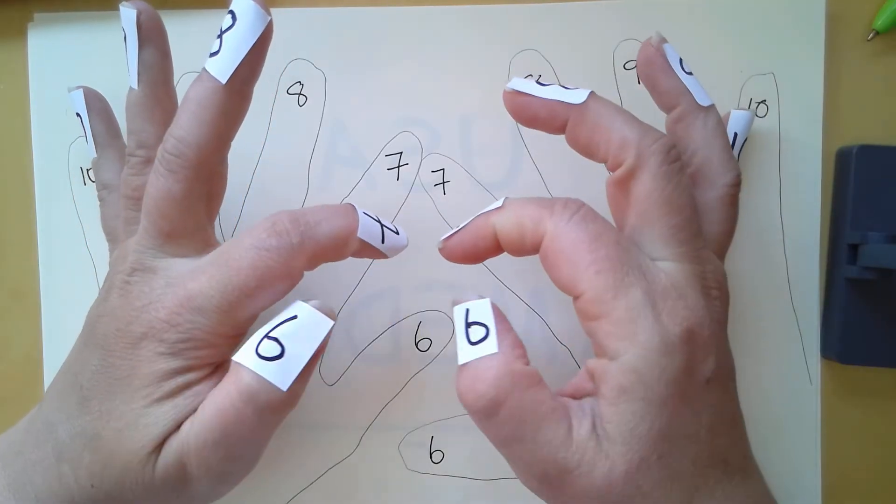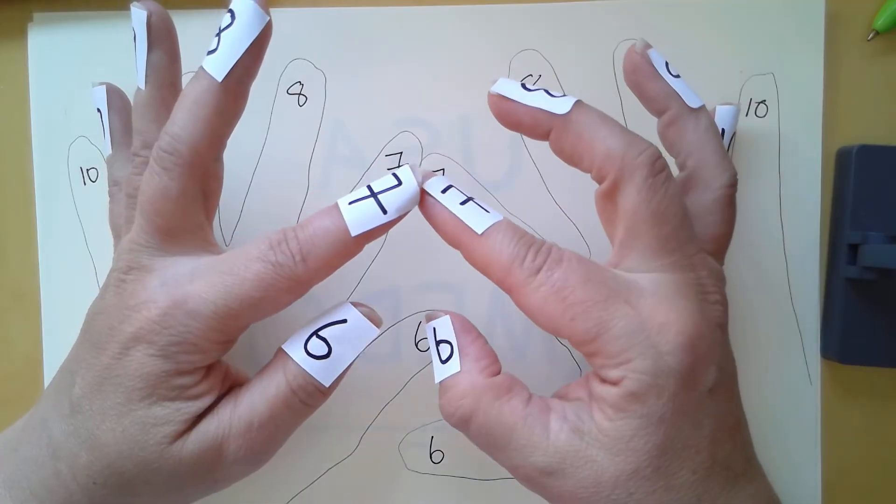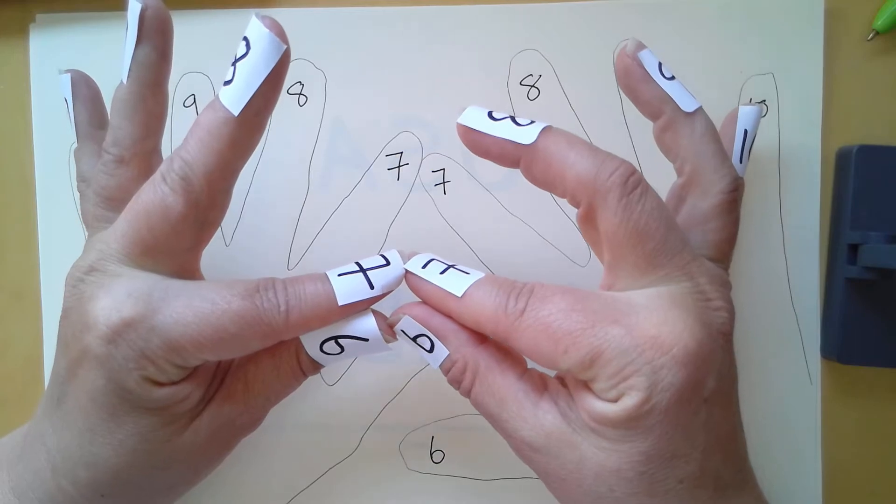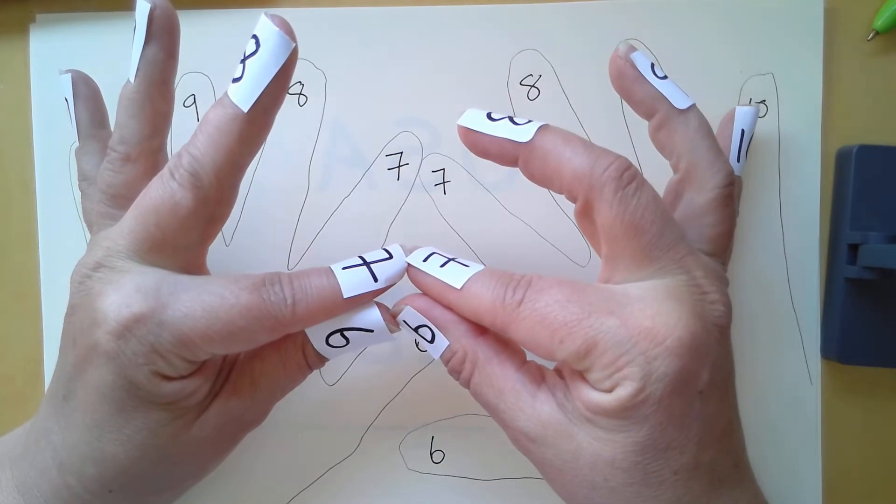It doesn't matter what the numbers are on those fingers. We're counting one, two, three, four - the number of fingers that are touching and the number of fingers that are below. That is our tens. Four tens is 40.